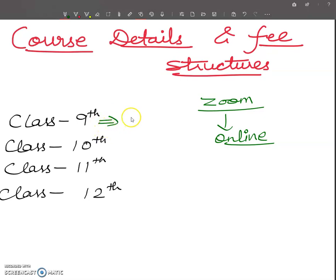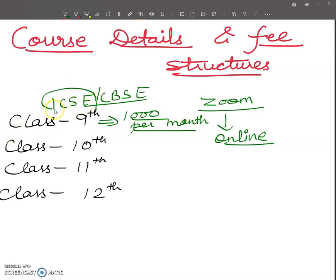For Class 9, we are taking students from different parts of the country at 1,000 per month for biology. That is ICSC biology or CBSE biology, any board. It doesn't matter which board you are studying in. You have to pay 1,000 per month, but I will discuss all topics as per the syllabus of ICSC because in ICSC board everything is in detail. That will help you in future competitive exams, so we are following ICSC syllabus.